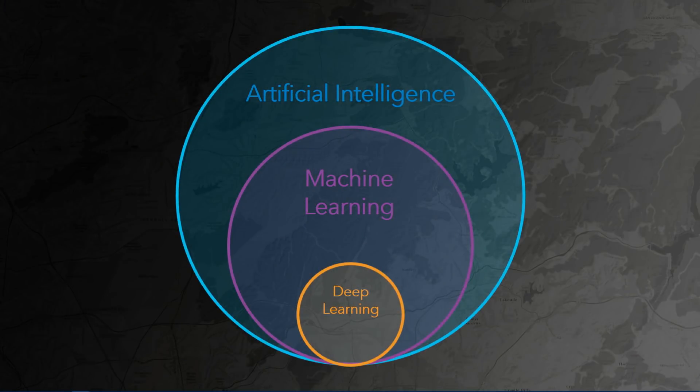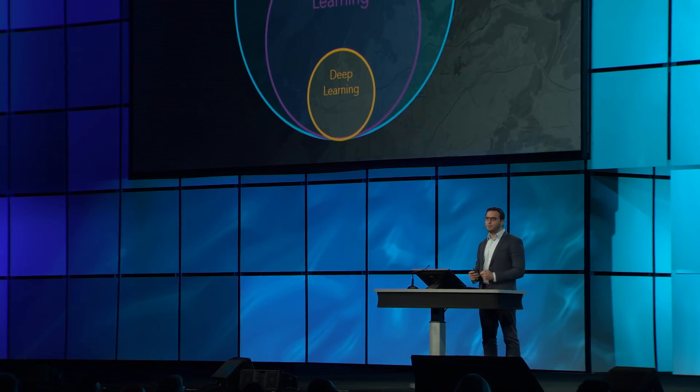AI is the paradigm of computing to get machines to be as smart as humans. Machine learning is a subfield of AI — it's about learning from data to derive rules and detect patterns, instead of being explicitly programmed by humans. And deep learning is a specific machine learning technique using deep neural networks, which is really good with high-dimensional data like voice, image, and videos.